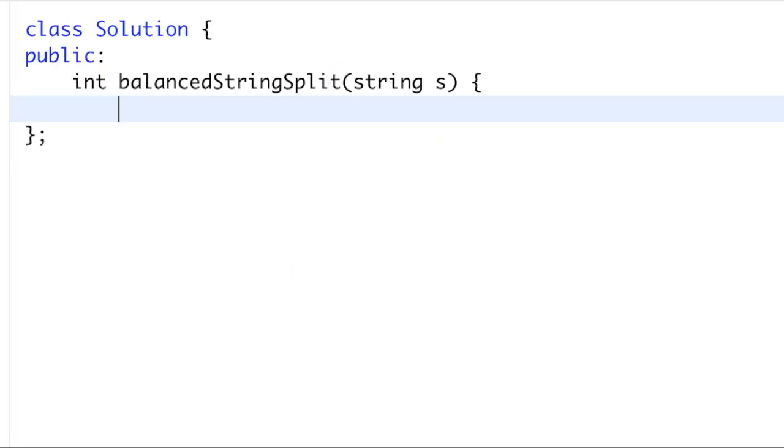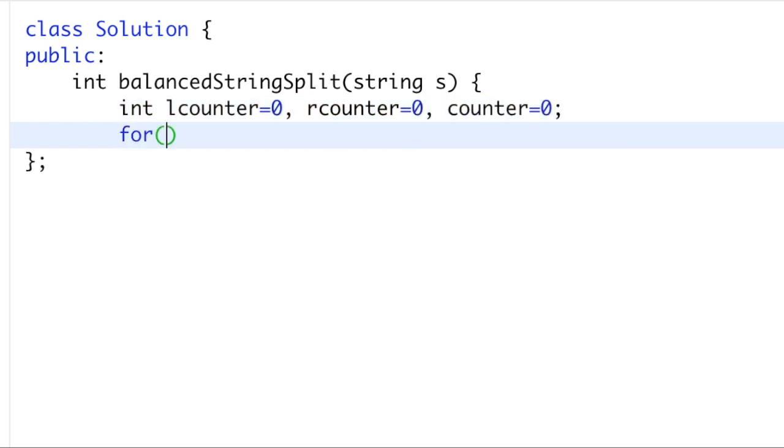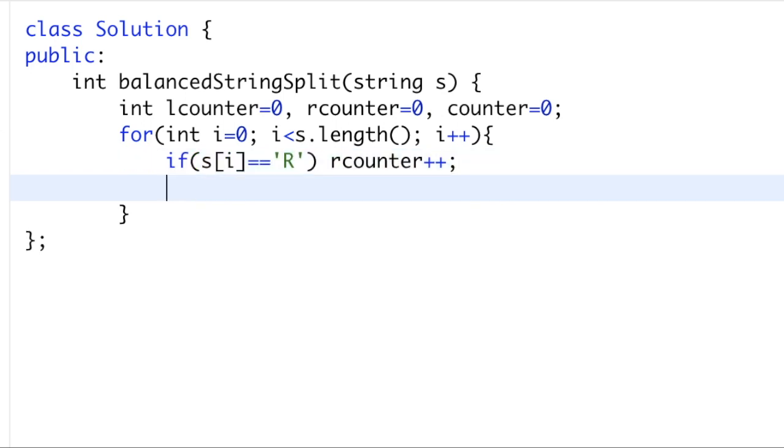Now let's go over how we can encode this solution. Here, remember we have our L counter equal to zero, R counter equal to zero, and counter equal to zero. These are our three counters. Now we just go through the array. Every time we find an R, we want to increment R counter by one. If not, if it's an L, we want to increase L counter.